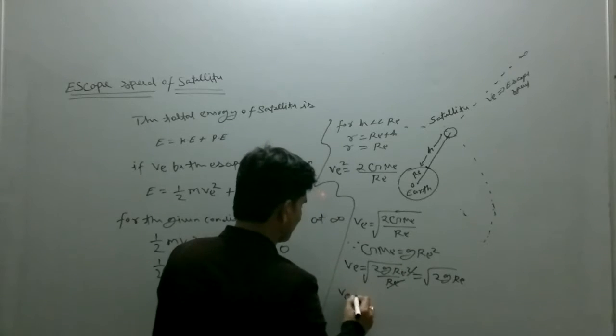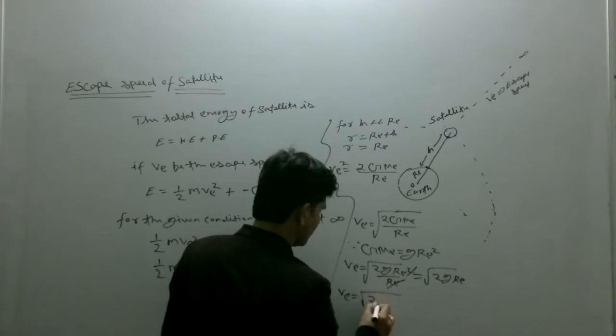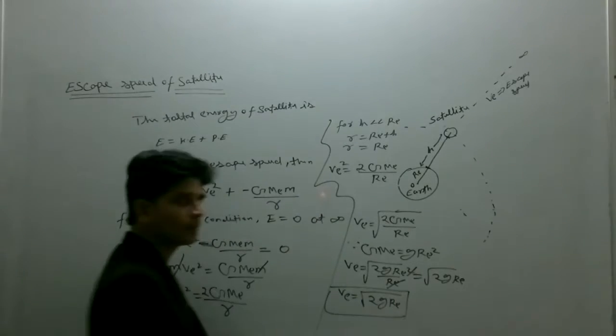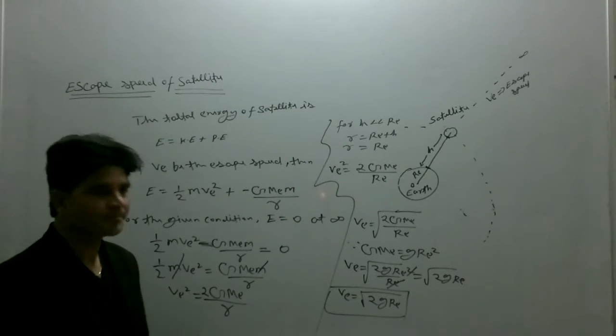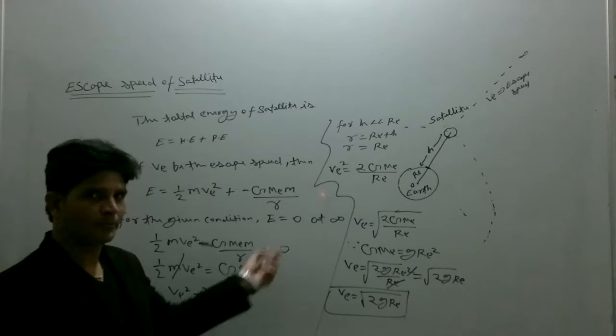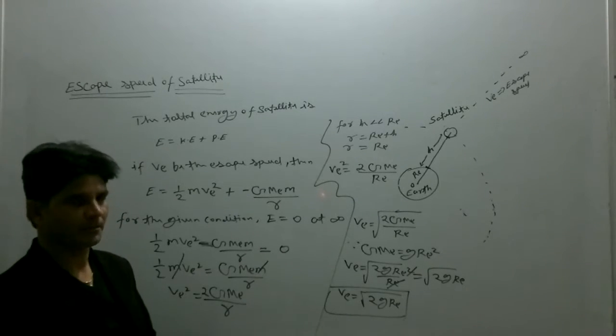This is the formula for escape speed: square root of 2g R_e. This is the formula of the escape speed for a satellite. Now we can calculate which speed is required to escape a satellite from its orbit to infinity.